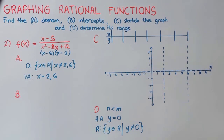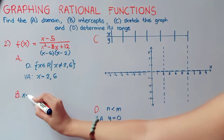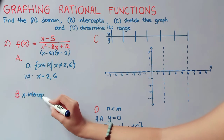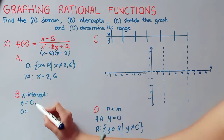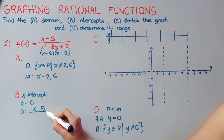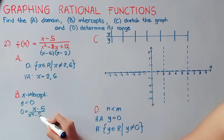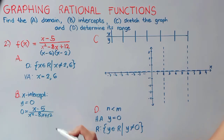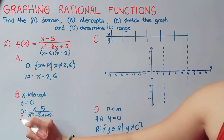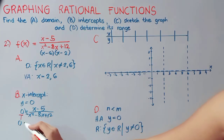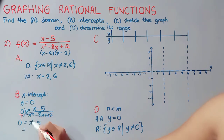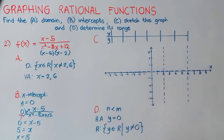Now let us proceed to getting our intercepts, starting with the x-intercept, which we get by letting y equal zero. So we have 0 equals x minus 5 all over x squared minus 8x plus 12. We can cross multiply since the denominator of 0 is 1, giving us 0 equals x minus 5. Transposing, negative 5 becomes positive 5, so x equals 5. That is our x-intercept.